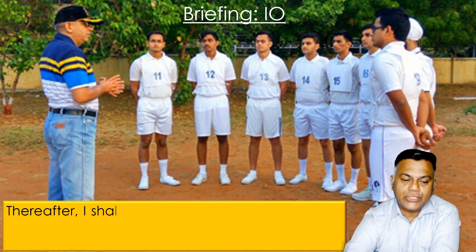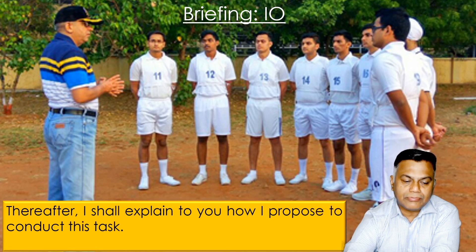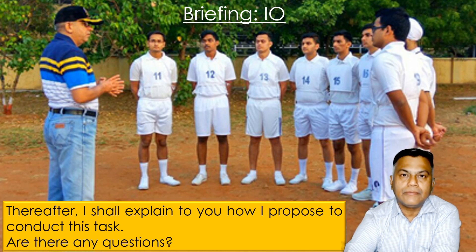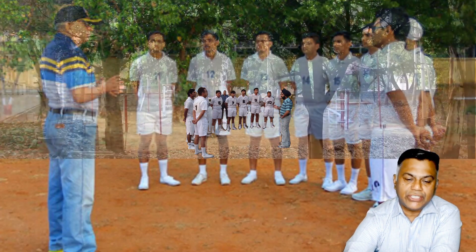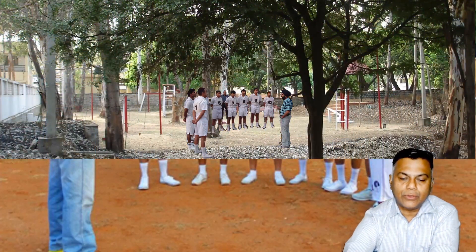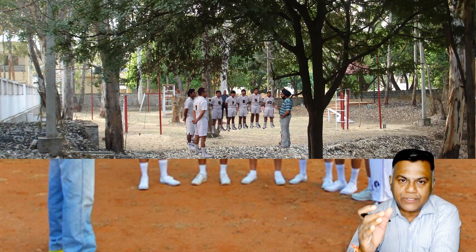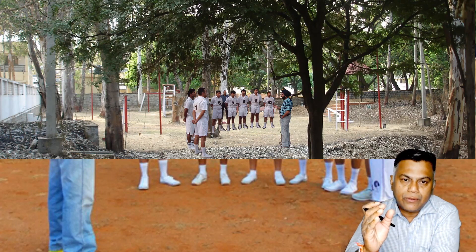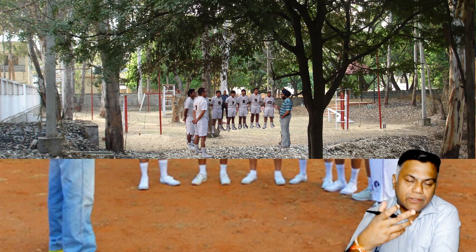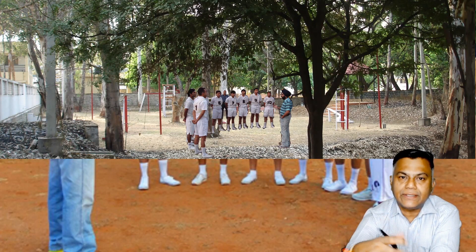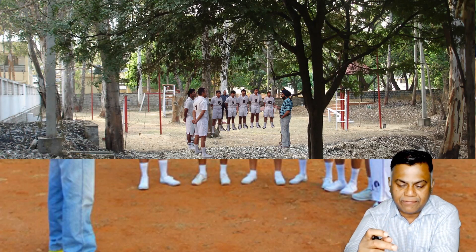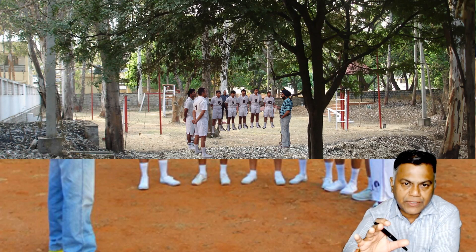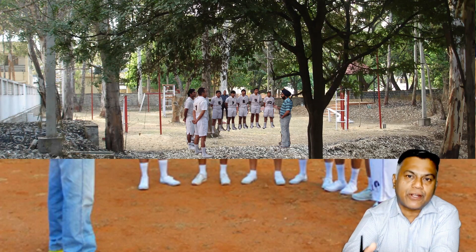After this, the GTO will take you around the obstacle course. Once you are shown around all 10 obstacles and a demonstration is given, you will be given two minutes to go around the obstacle course and plan your mental strategy — in which order you want to attempt them. Once finished with those two minutes, you will be called back and the balance part of the briefing will be conducted.